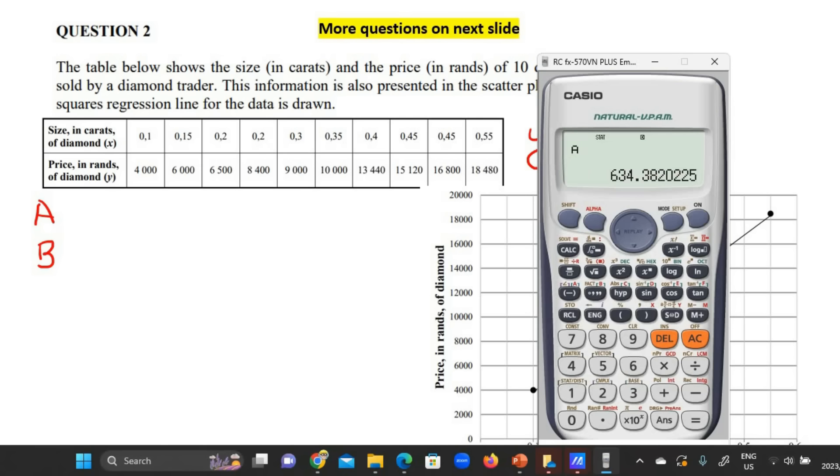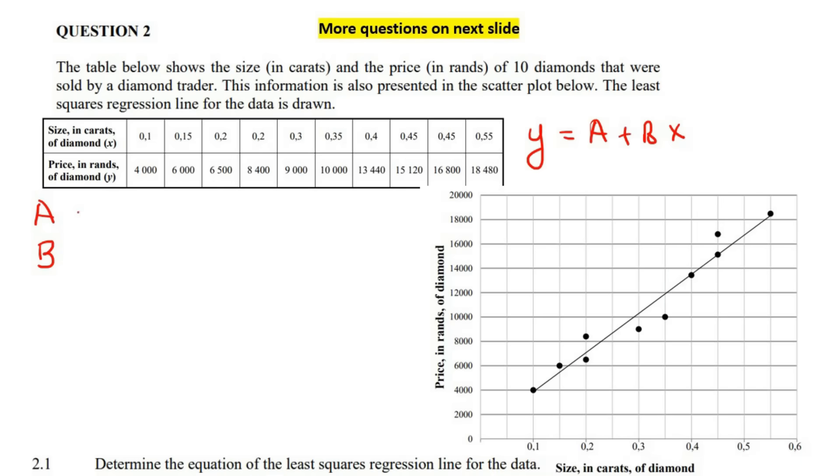I'm going to quickly write that number down. Then we're going to go find the B value. You can press shift again, then press number one to go back to the same screen, and then press number two this time, then press equals. There's your B value. The value of A, if we round to two decimal places, was 634.38, and the value of B was 32189.26. So now when you write out the formula, the least squares regression equation, it's y equals A plus BX. That's going to be y equals 634.38 plus 32189.26x.